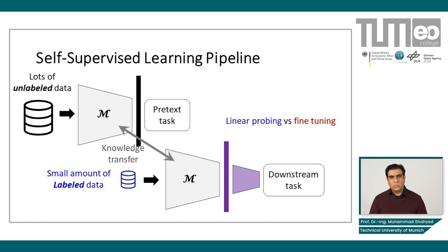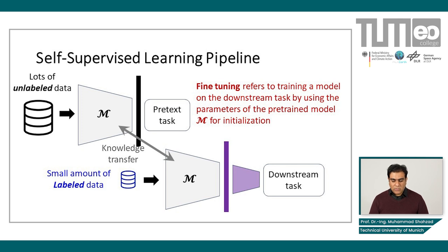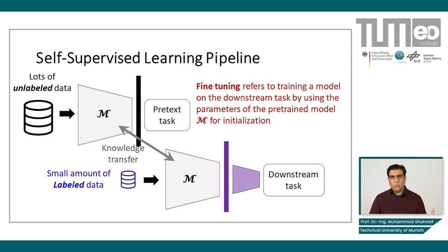There are two general strategies. One is called linear probing and one is called fine-tuning, regarding how we update the weights when we use this labeled data for training. Linear probing refers to fixing the parameters of the learned model M — we freeze the encoder part and train a linear classifier on top of the generated representations. This helps measure how linearly separable the pre-trained embeddings are. Fine-tuning refers to training a model on the downstream task using the parameters of the pre-trained model M for initialization, but the weights of M itself are also updated. In linear probing we fix M; in fine-tuning we update M's weights along with the linear embedding.